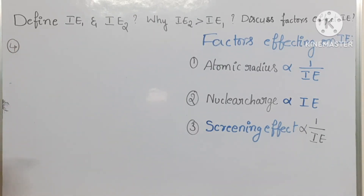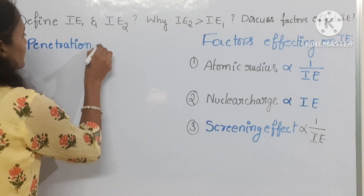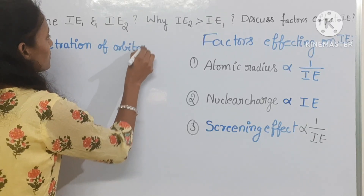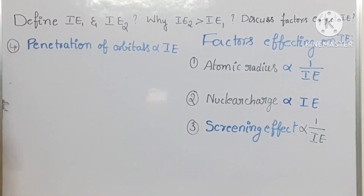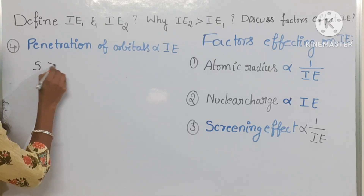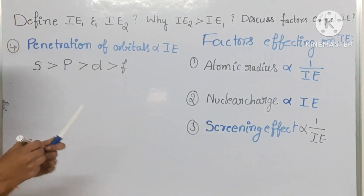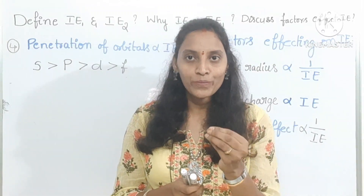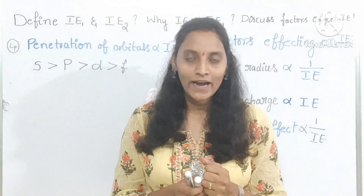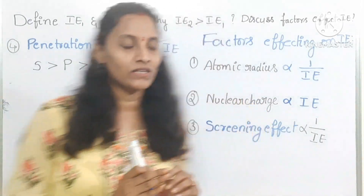The fourth factor is penetration of orbitals. Penetration of orbitals is directly proportional to ionization energy. S orbital has the most penetration towards the nucleus, then P, then D, then F. If an orbital has more penetration power towards the nucleus, the electron in that orbital needs more energy to be removed. So if penetration power increases, ionization enthalpy increases.